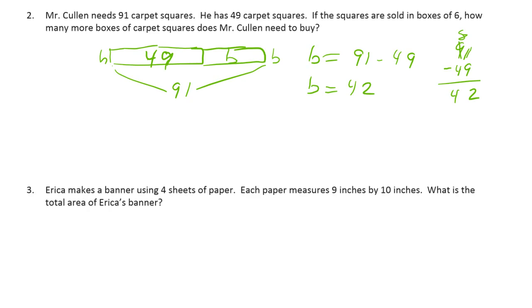And then, so now we have to figure out how many boxes of carpet squares he needs to buy. So, that's 42 divided by 6 is going to equal how many. I'll just write H for how many. Which is 42 divided by 6 is 7. He needs 7 boxes of carpet squares.